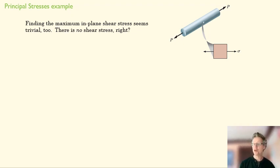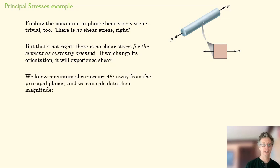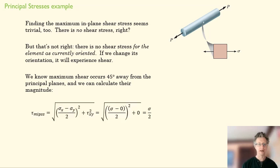Do we have shear stress? We do if we change our orientation. There's no shear stress for this element right here, this square here. But if we change its orientation, it's going to have some shear stress. We know that a maximum shear stress occurs 45 degrees away from our principal planes. And so we can calculate that magnitude. And we go back to our equation from the last mini lecture.